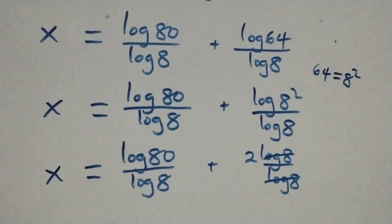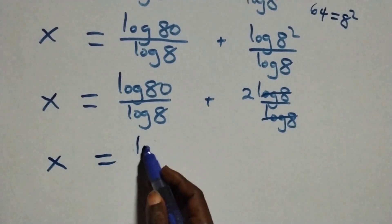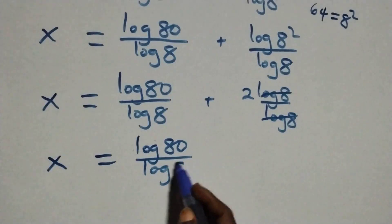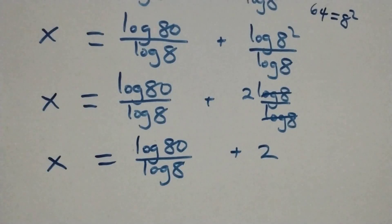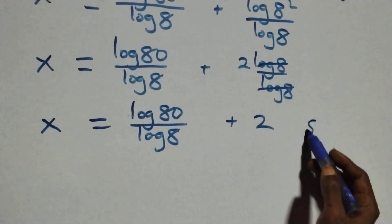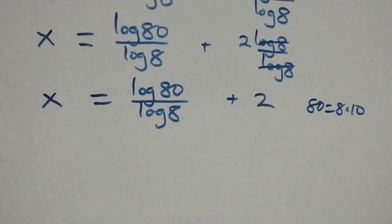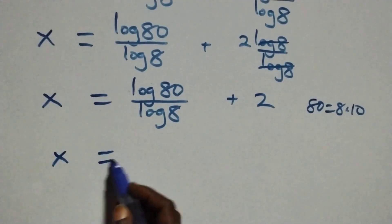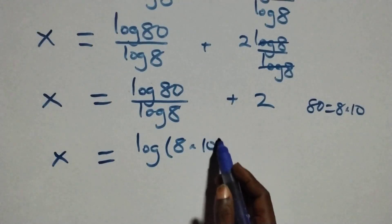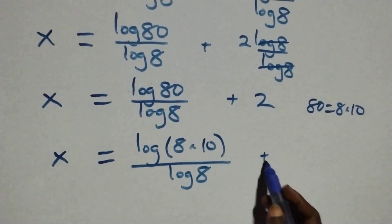Log 8 over log 8 cancels each other, giving 1. So this becomes x equals log 80 over log 8 plus 2. Then we can write 80 as 8 times 10, so what we have becomes x equals log of 8 times 10 over log 8 plus 2.